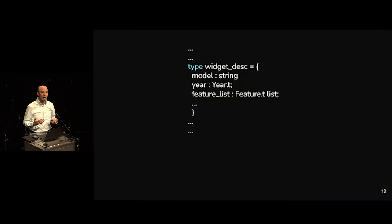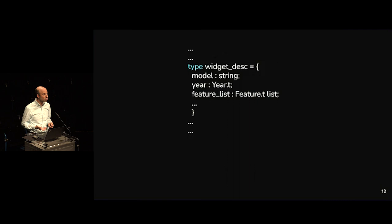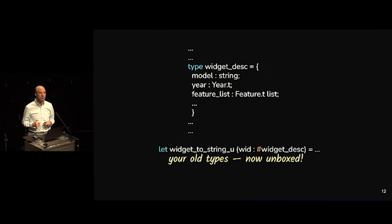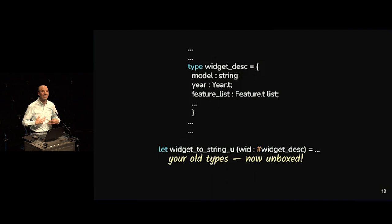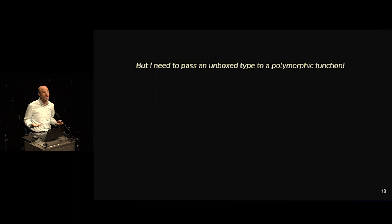We want unboxed types to be widely available. If you already have a widget descriptor type with a bunch of fields and functions operating on it, by just putting a hash mark in front of the name you can use an unboxed version. The way to think about it is: a type declaration for widget_desc actually declares two different types — one boxed and one unboxed — and the hash mark selects which one you want. The hash mark in front of record construction disambiguates between the boxed and unboxed version without needing a type annotation, making the feature easy to use incrementally.